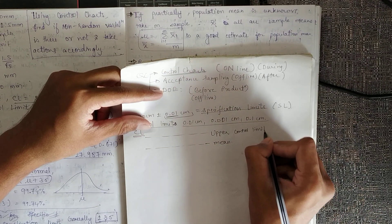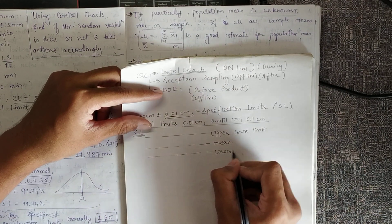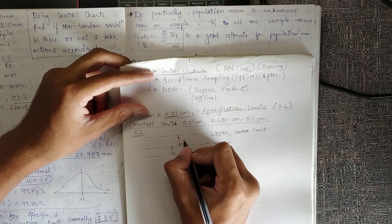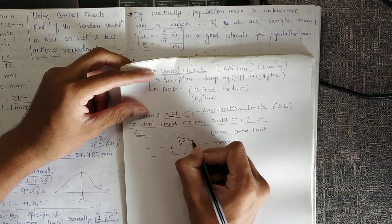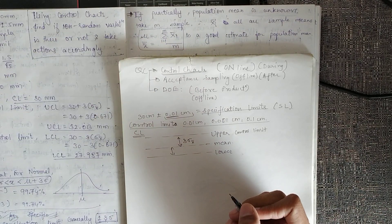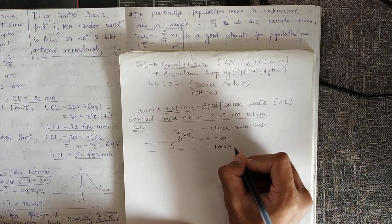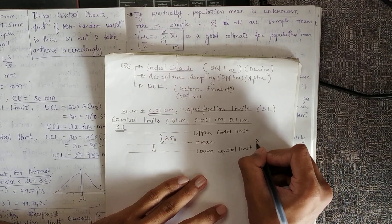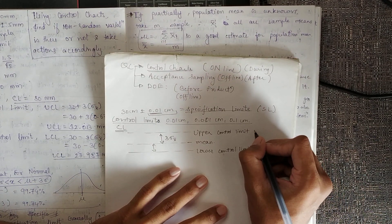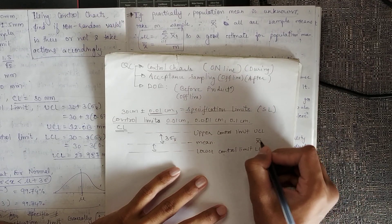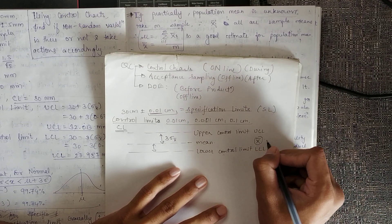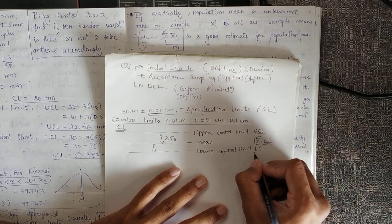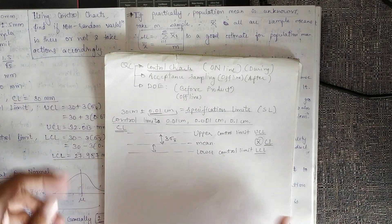The distances from the center line to the upper and lower control limits are generally equal, and they are equal to three times the standard deviation of x-bar. So: lower control limit = x-bar minus 3σ(x-bar), and upper control limit = x-bar plus 3σ(x-bar). The center line is UCL at top, center line in the middle, and LCL at the bottom.